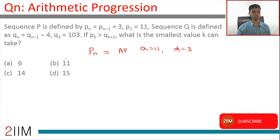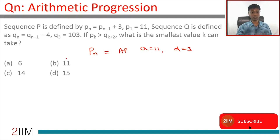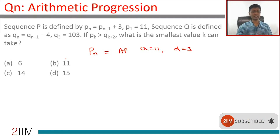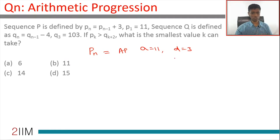Sequence q is defined as qn equals qn minus 1 minus 4, or each term is the previous term minus 4. This again is an arithmetic progression, and for this sequence the common difference is minus 4.